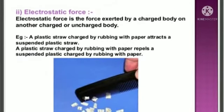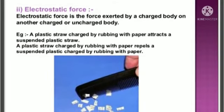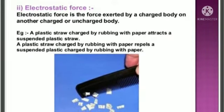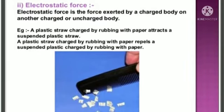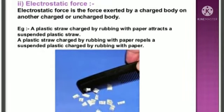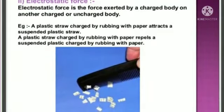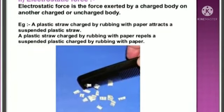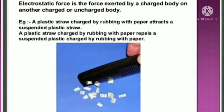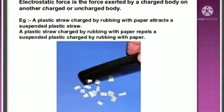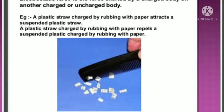Electrostatic force is the force exerted by a charged body on another charged or uncharged body. For example, a plastic straw charged by rubbing with paper can attract another suspended plastic straw. This is because rubbing causes the straw to become charged, and it then attracts the paper.